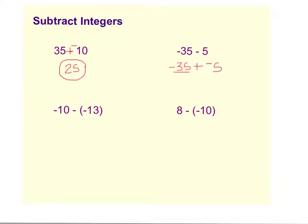So if I were to do this up in the problem you would keep the 35. We're going to change the subtraction to addition and you're going to change the 5 to a negative 5. So now we are adding